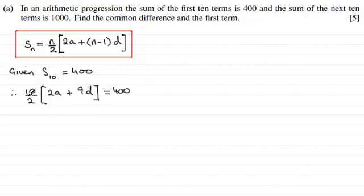So 10 divided by 2 is 5. Let's just cancel that out. So 2 into 2 goes 1, 2 into 10 goes 5. So if we multiply the bracket by 5 we therefore get 10A plus 45D and that equals 400.